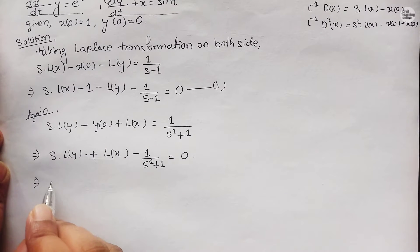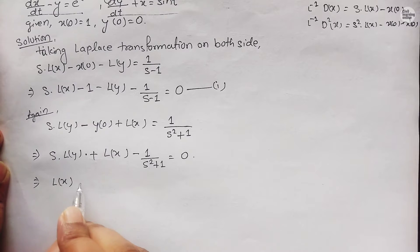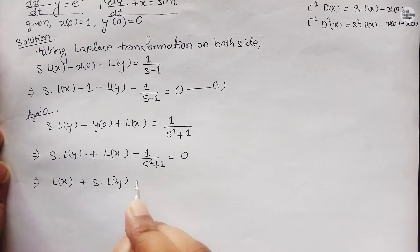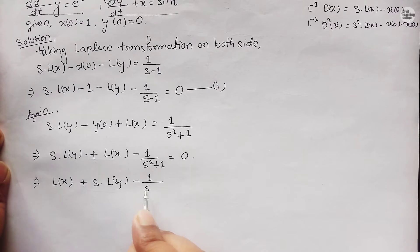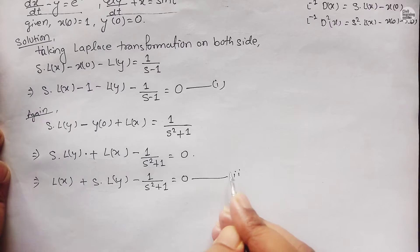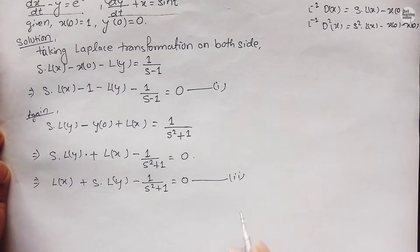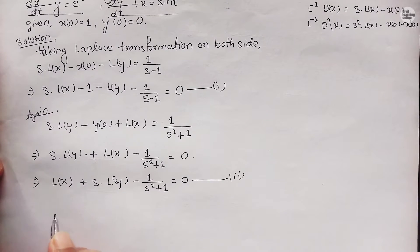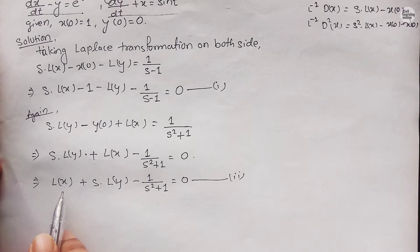We rewrite this as L{x} plus s·L{y} minus 1/(s²+1) = 0. Let this be Equation 2. Now we will apply Cramer's rule to find the values of L{x} and L{y}.